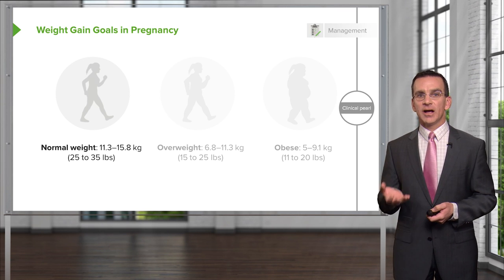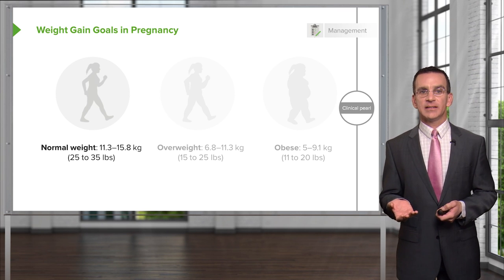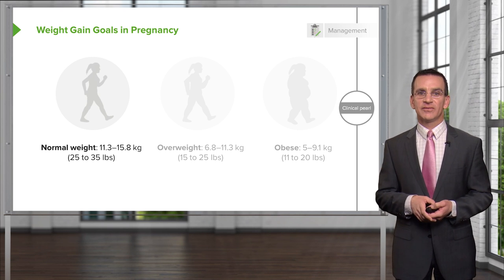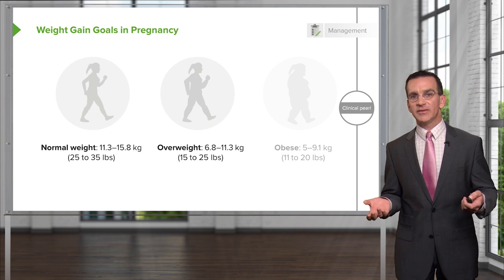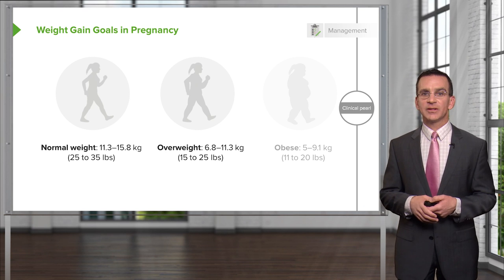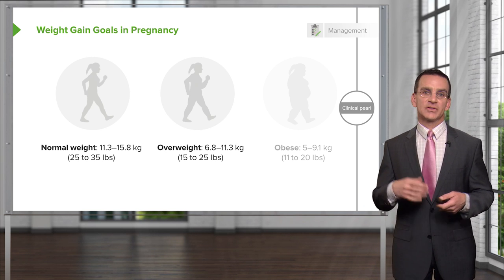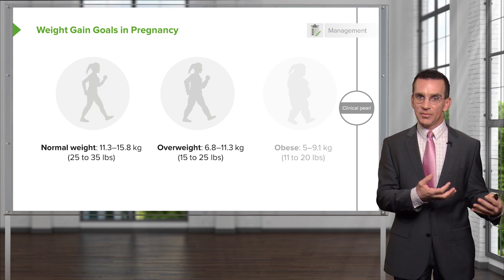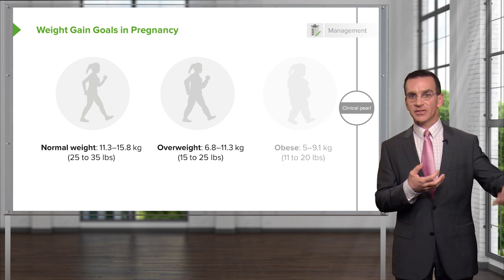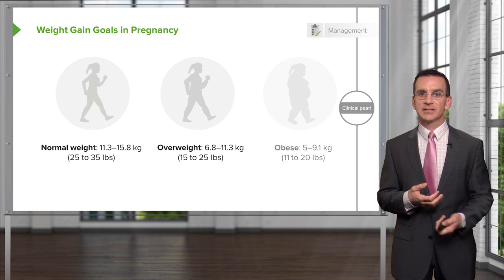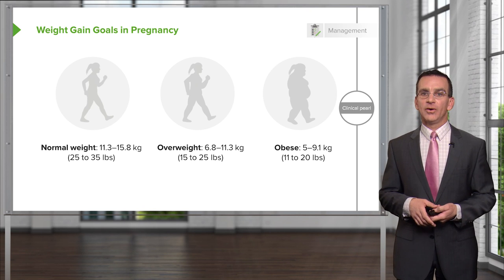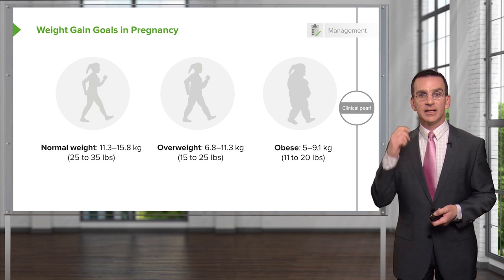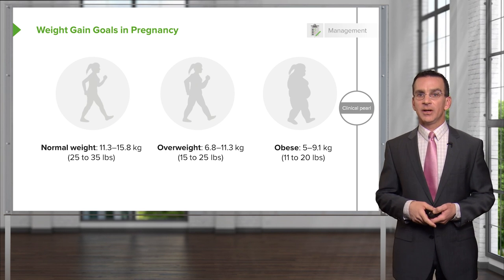Weight gain goals during pregnancy: for normal weight individuals, 11 to 15 kilograms or 25 to 35 pounds. For overweight individuals, a lower goal is recommended, as excessive weight gain in pregnancy leads to higher risk of hypertension and diabetes afterward. For women who are obese when they become pregnant, the goal is even lower — only 11 to 20 pounds, or under 10 kilograms.